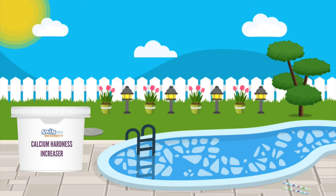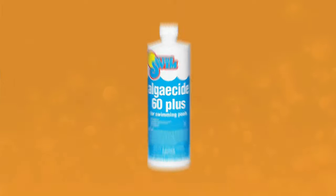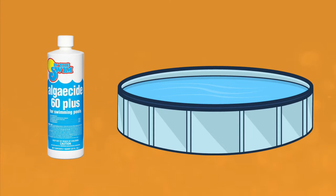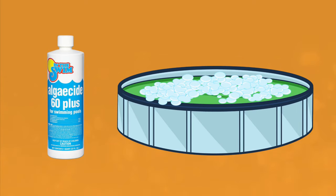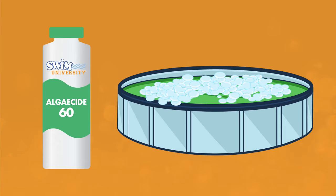Now, another pool foam chemical culprit: algaecide. If you add algaecide to your pool and there's no algae for it to kill, it will thicken the water and create foam. Also, if you use too much algaecide, even if there is algae in your pool to kill, it can cause foaming. The type of algaecide matters too. Look for Polyquat 60 algaecide. It's less likely to produce pool foam than other algaecides.